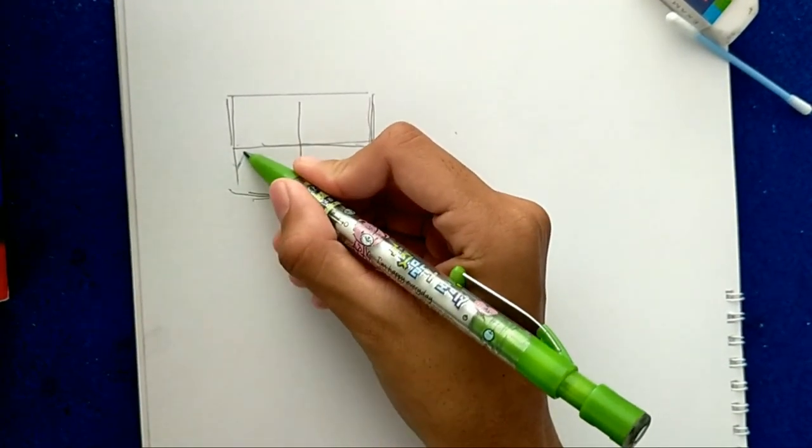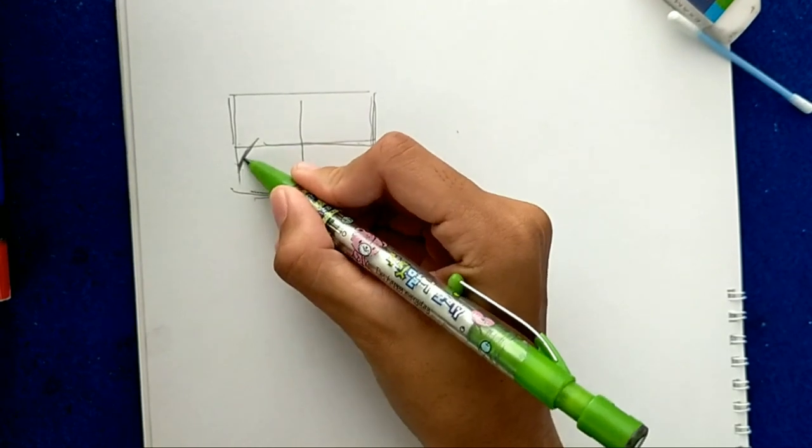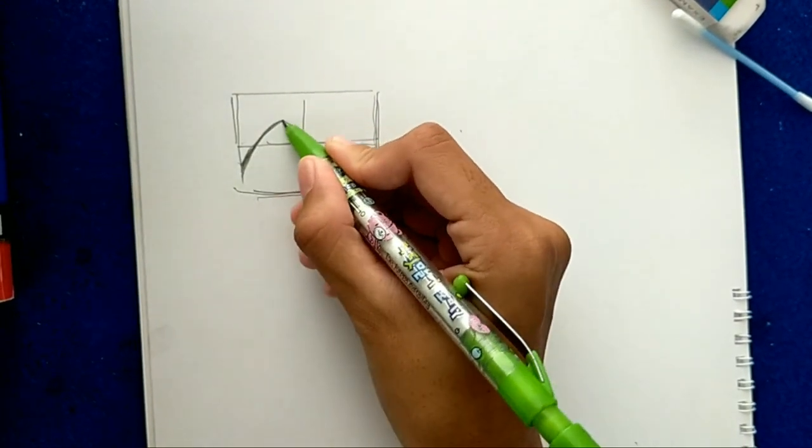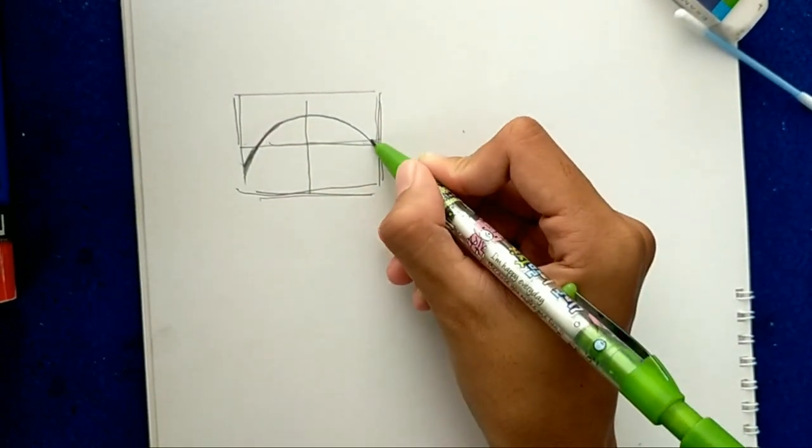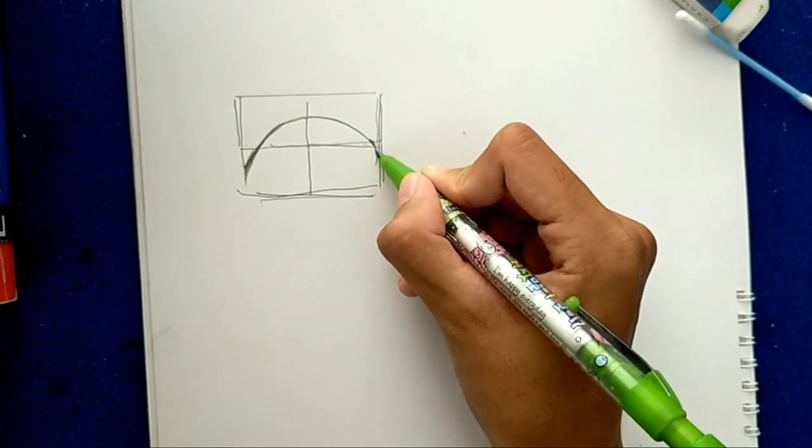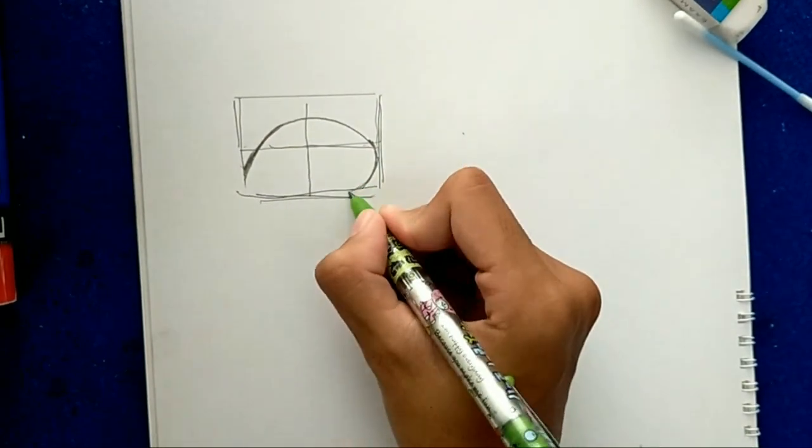The next step is we should draw three quarters oval as the eye line. Just draw it slowly until you find the shape of the eye.